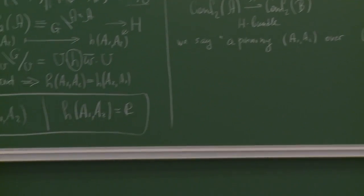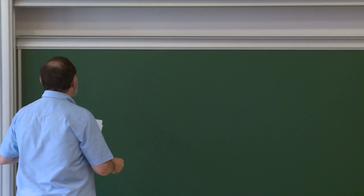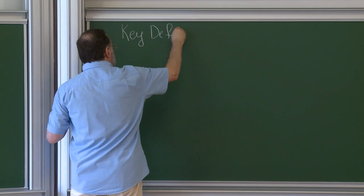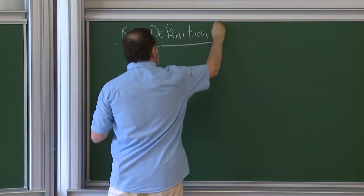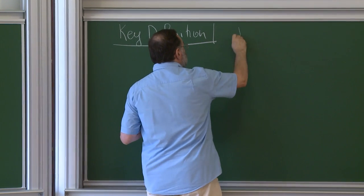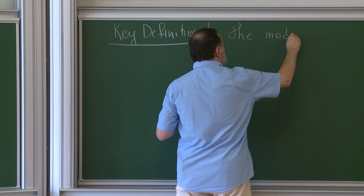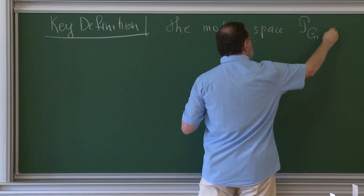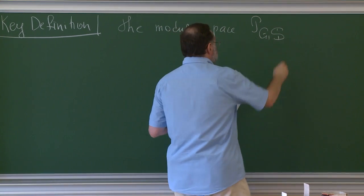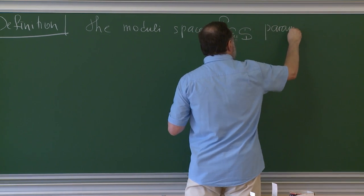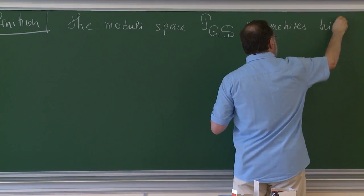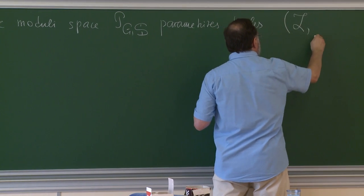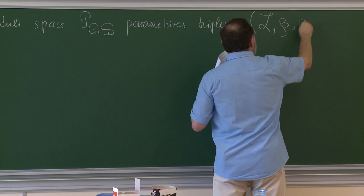Now we can go to the key definition, with an example to follow. The moduli space PGS parametrizes triples L, beta, and P (a pinning).